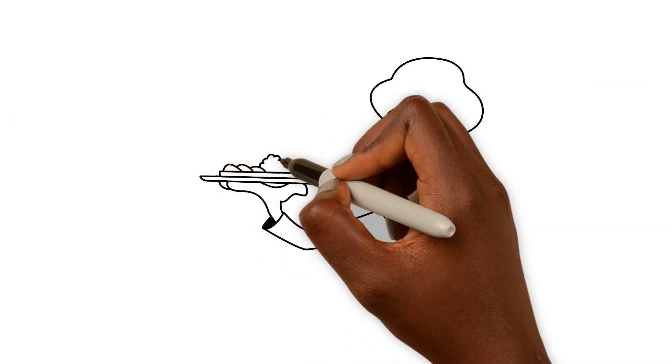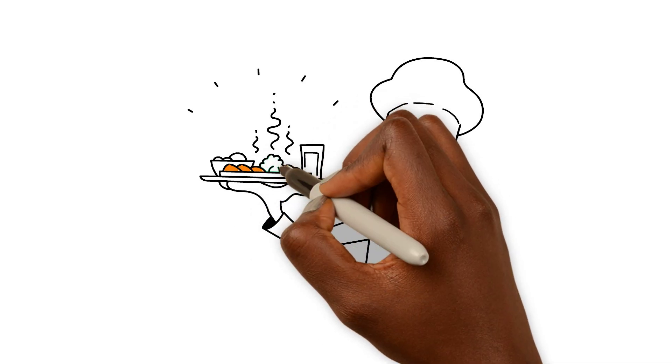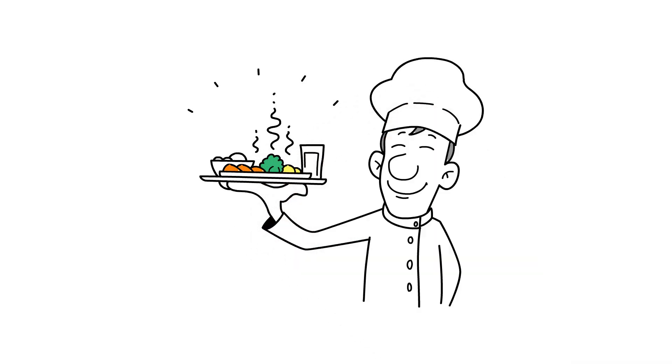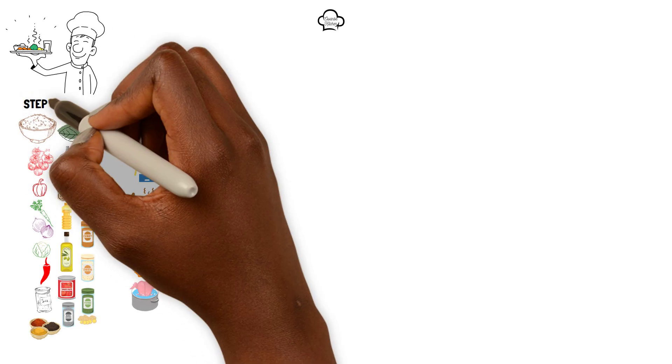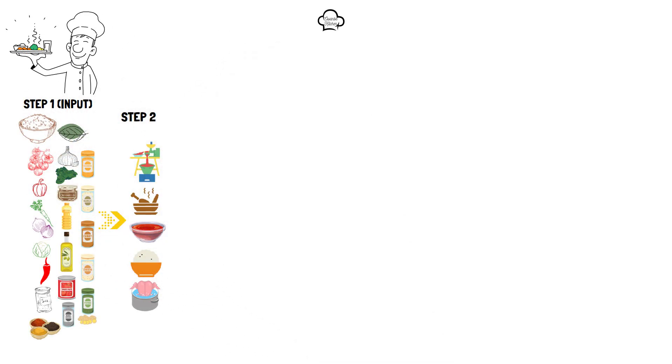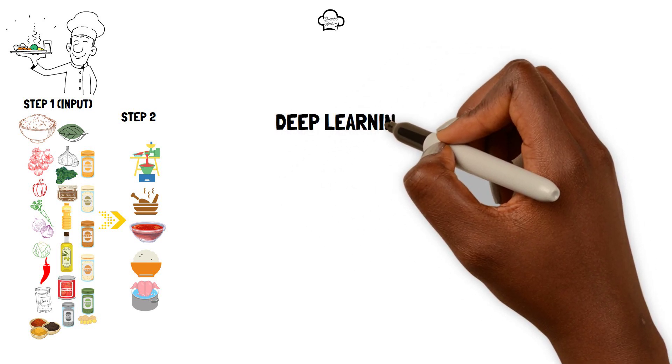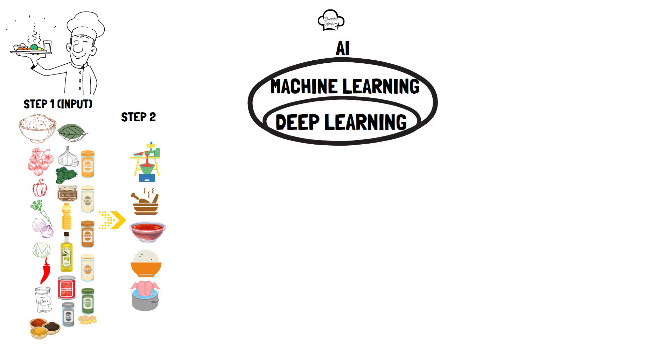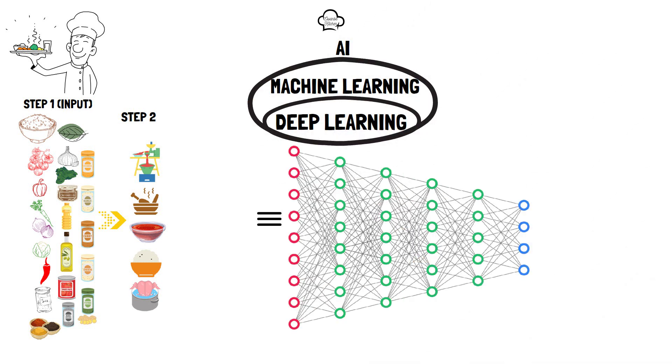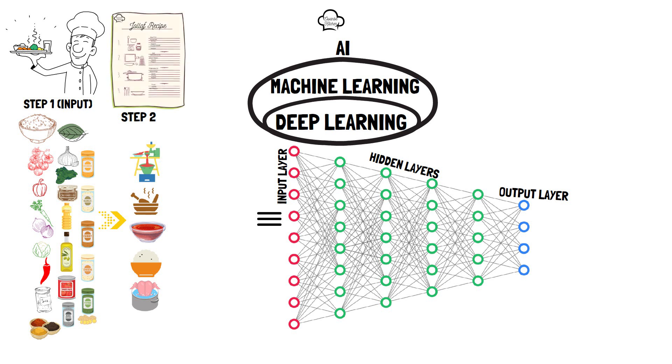Now, we can take our Jollof rice cooking skills to the next level and become a master chef. As master chefs, we work with complex recipes with many steps and ingredients. In the world of AI, this is called deep learning, which is a subset of machine learning. Deep learning involves using neural networks with multiple layers to process and understand data. These neural networks are like advanced recipes with many complex steps.